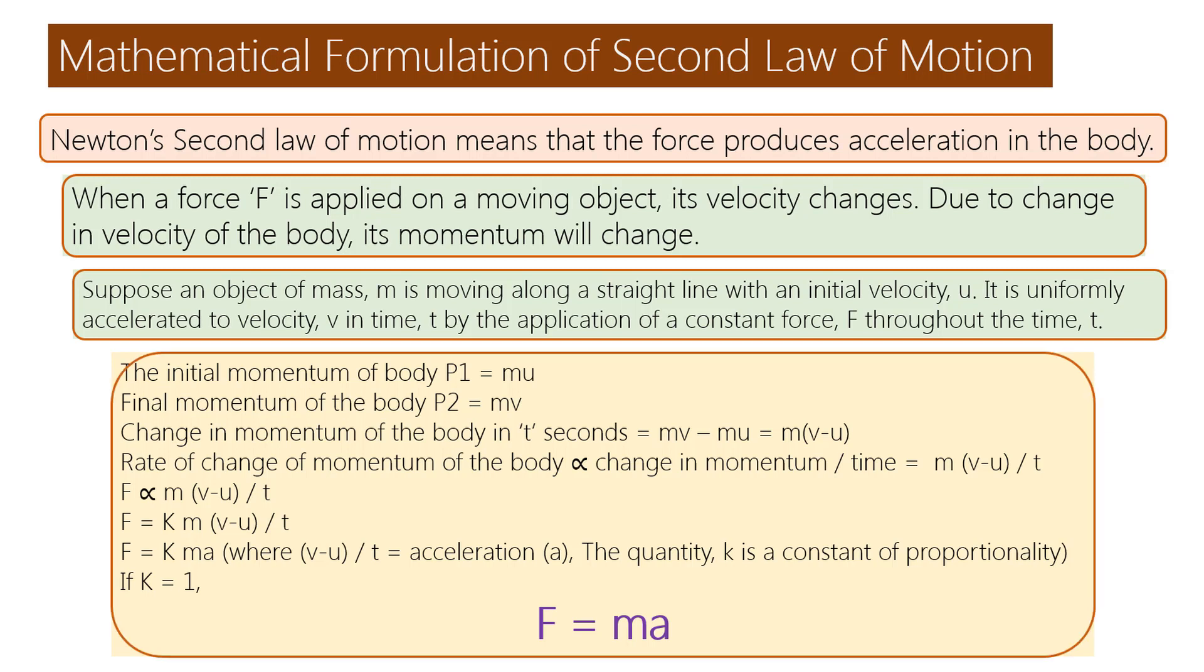The initial momentum of body P1 is equal to MU. Final momentum of the body P2 is equal to MV.